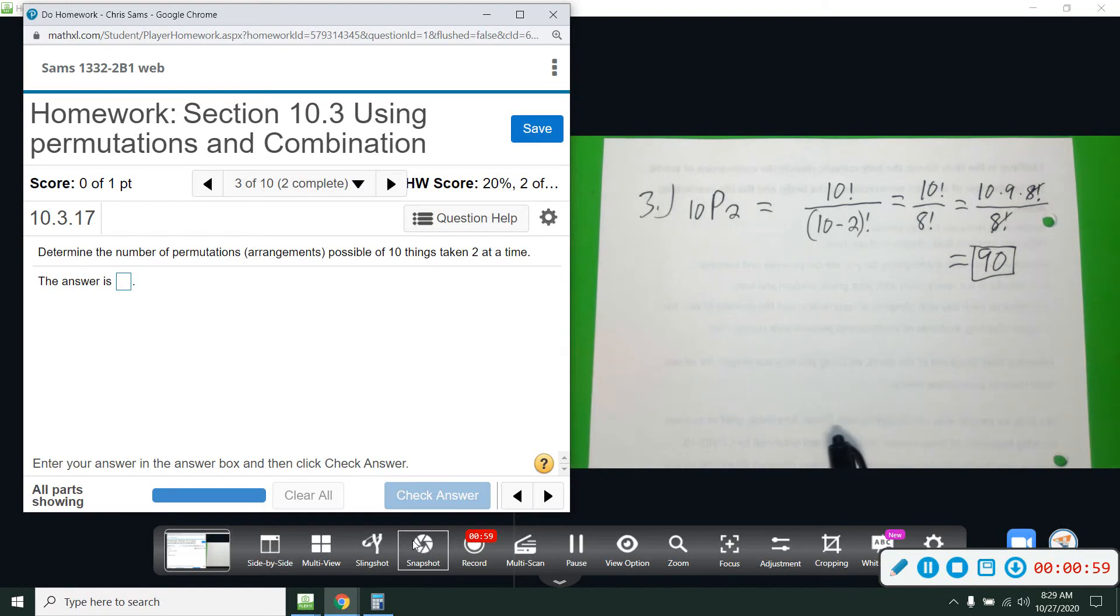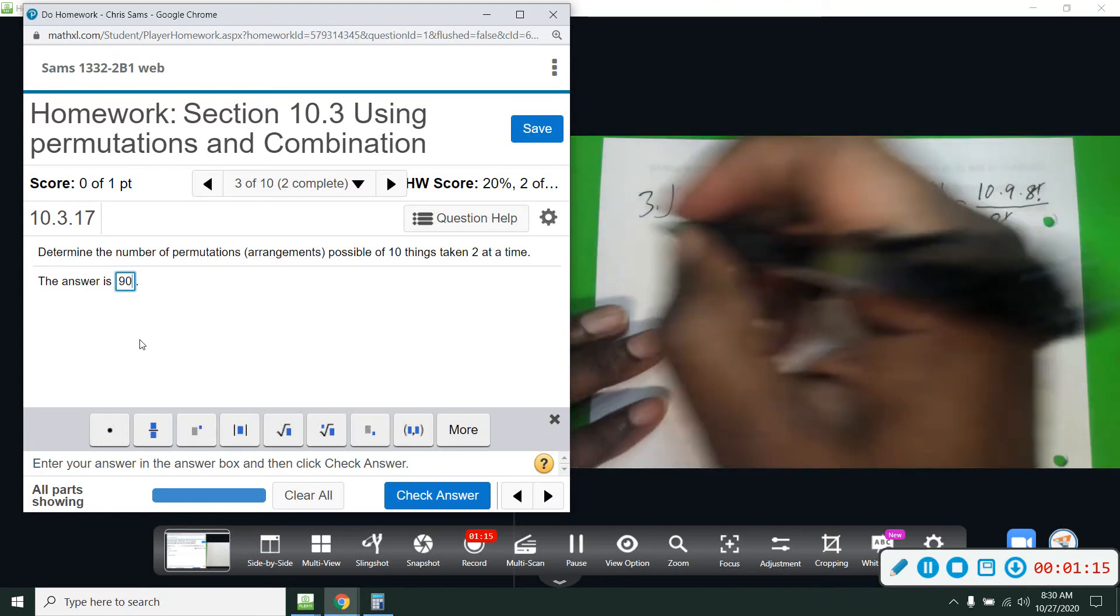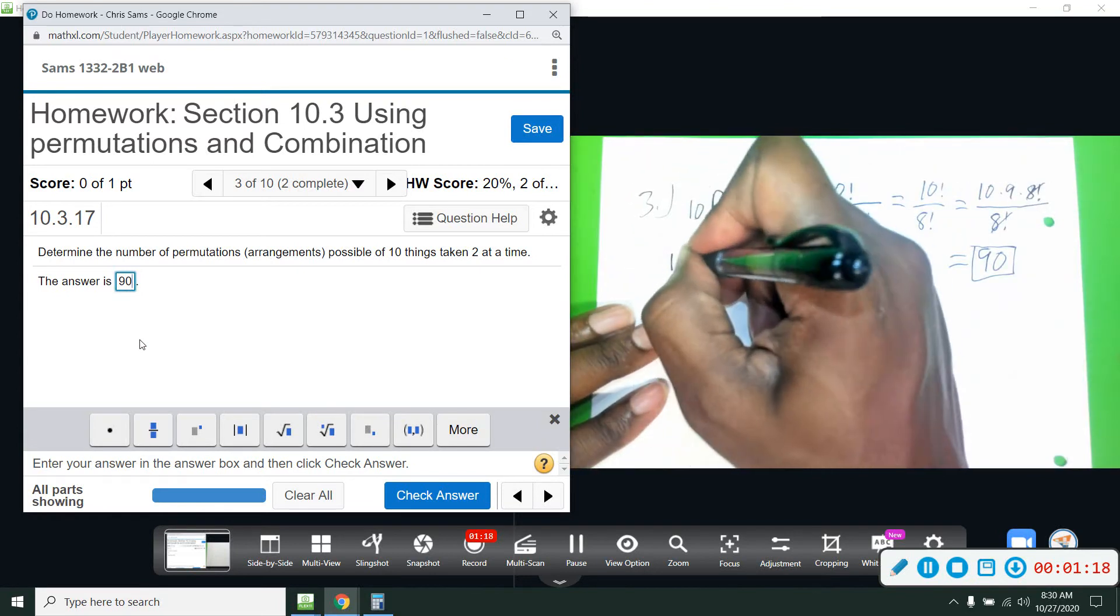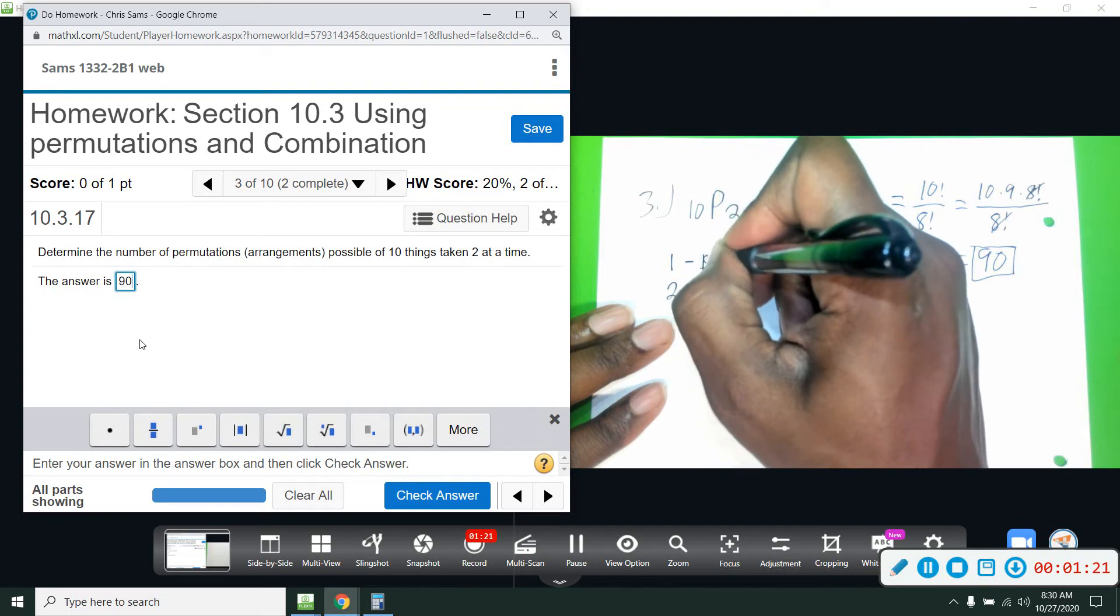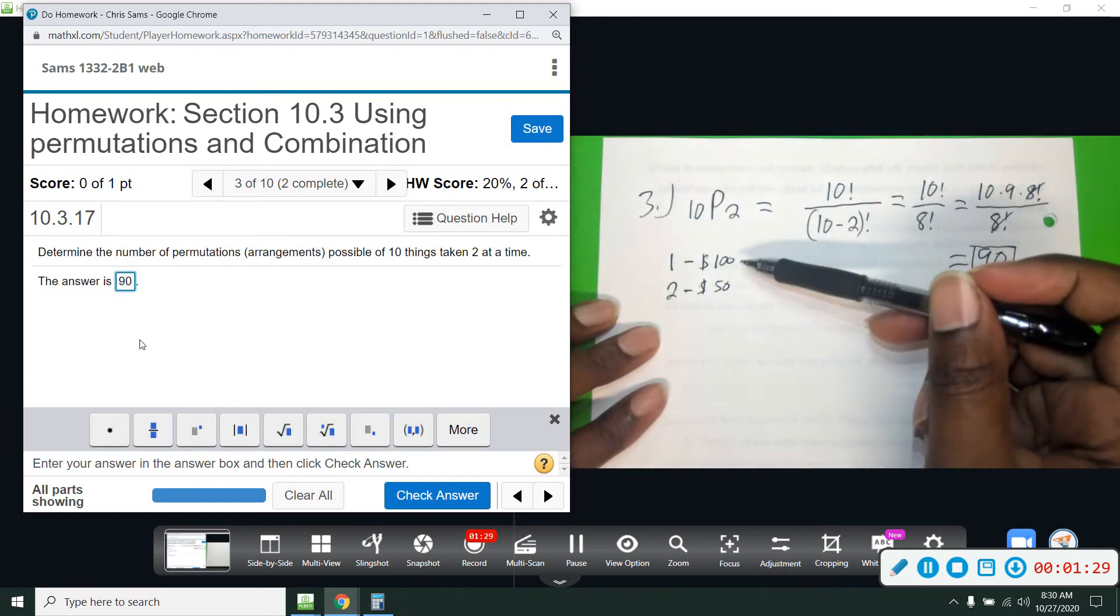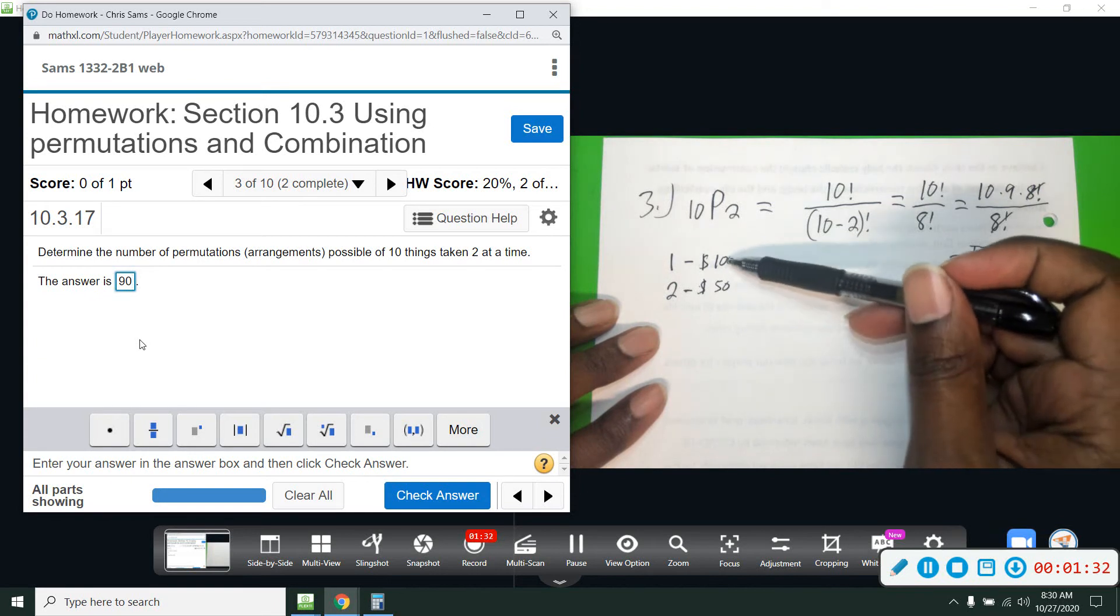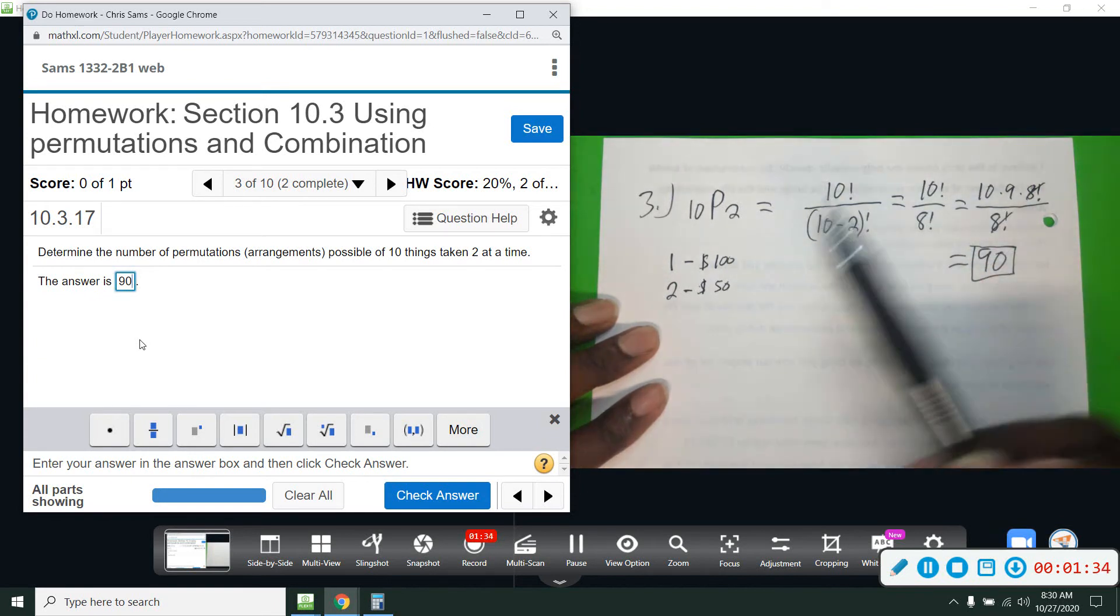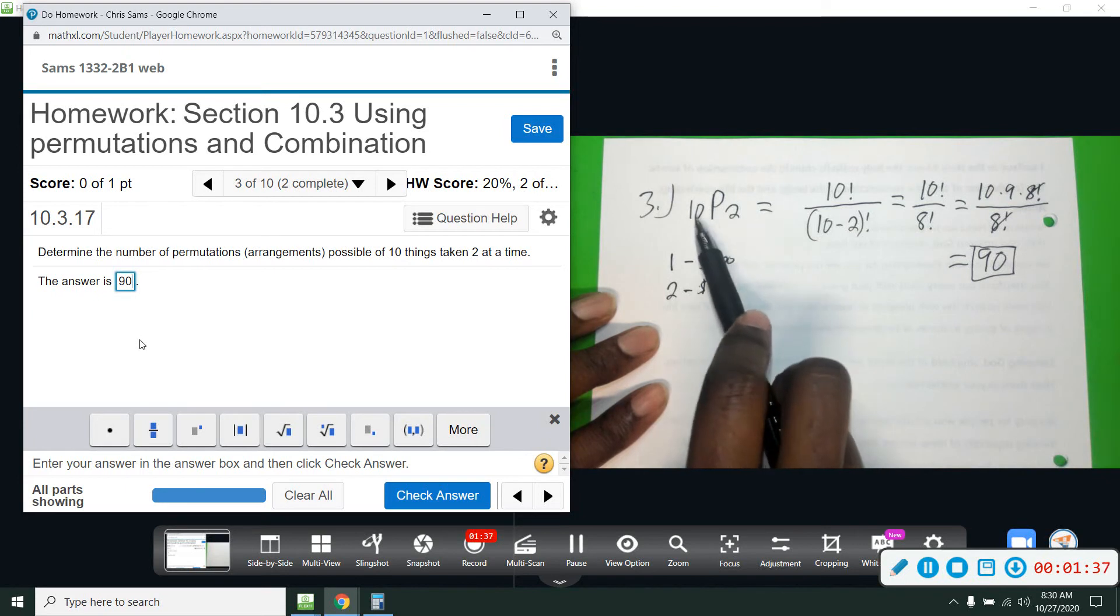So if you have ten things and you want to make a group of two, then there are ninety ways to do that. Just to drive this point home a little bit better, let's say that we have ten students in class. I'm going to draw two names out. The first name is going to get a hundred dollars, and the second name is going to get fifty. There's a distinguishable difference if your name is drawn first as opposed to second. So permutations is the drawing where your order matters.